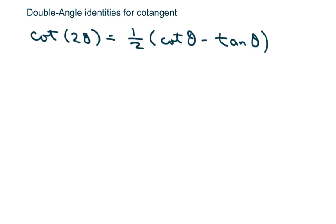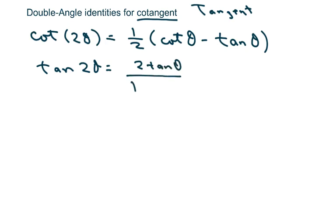Hi everyone, this is a double angle identity for cotangent which is really for tangent. Just know that tan of 2 theta equals 2 tan of theta over, this is the one we're going to use, 1 minus tan squared of theta.